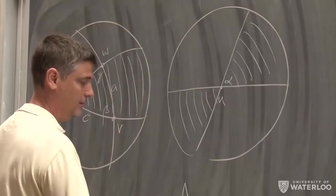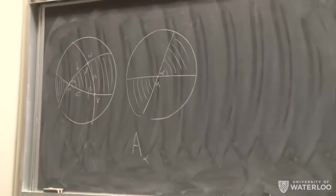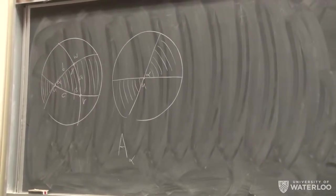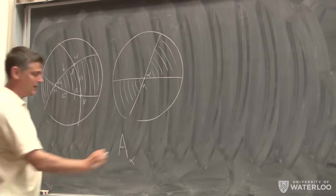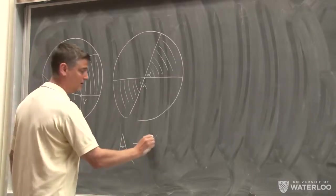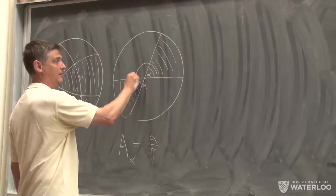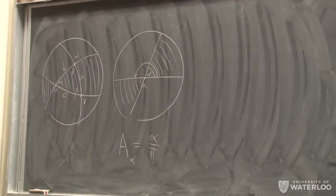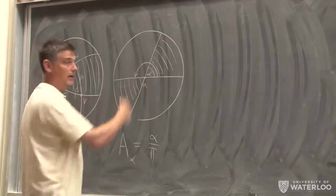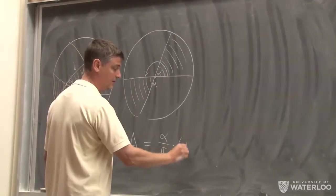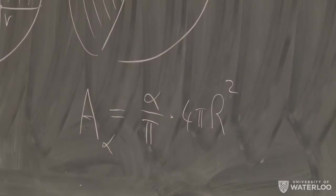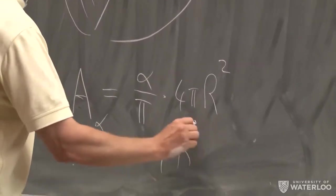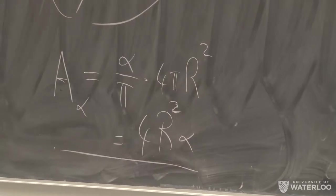Can anyone see what the area is from that picture? I'll write A_α for the area of that alpha wedge. It's α/π times the full surface area of the sphere — you can see that from the picture. And the π's cancel, giving A_α = 4R²·α. So we've got a formula for one alpha wedge.